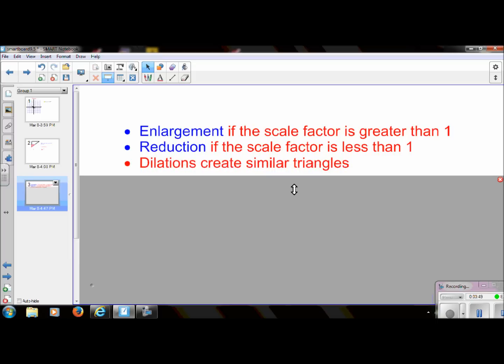Dilations create similar triangles because remember when we learned about similar triangles, all the sets of corresponding sides had to have the same scale factor and the corresponding angles were congruent. Same thing happened here. I'll see you guys in class.